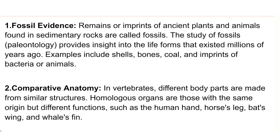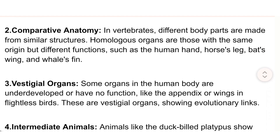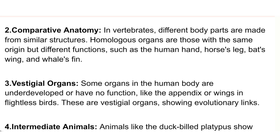2) Comparative anatomy — different body parts are made from similar structures. Homologous organs are those with the same origin but different functions, such as the human hand, horse's leg, bat's wing, and whale's fin.